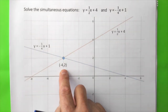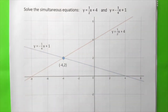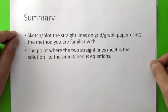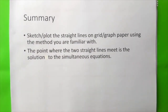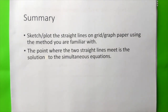You can verify this by substitution or elimination method. As a summary, we can sketch or plot the straight lines on grid or graph paper using the method you are familiar with. The point where the two straight lines meet is the solution to the simultaneous equations. This is the end of the lesson. Thank you.